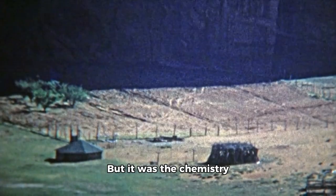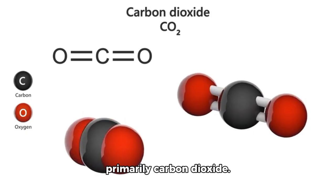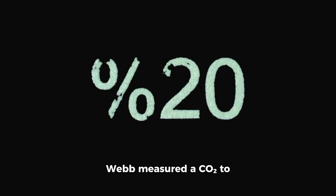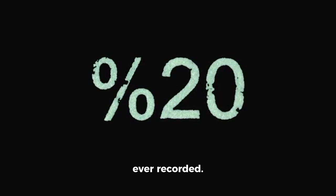But it was the chemistry that stunned astronomers. Water did not dominate the coma, as is typical for comets. Instead, it was primarily carbon dioxide. Webb measured a CO2-H2O ratio of nearly 8 to 1, among the highest ever recorded.